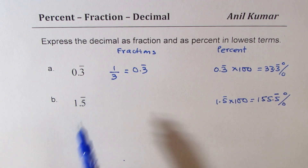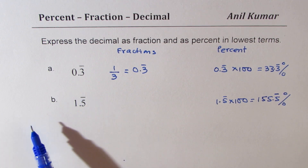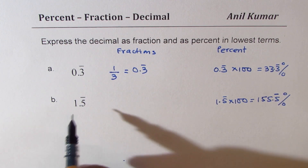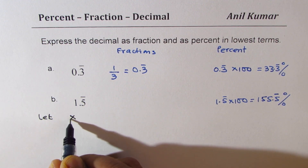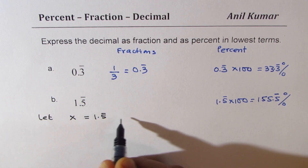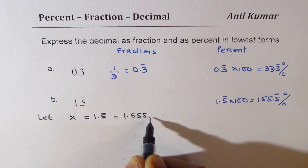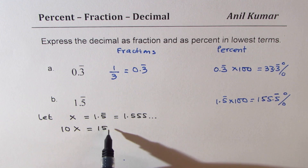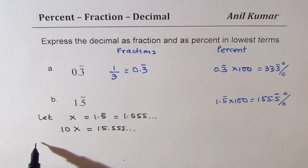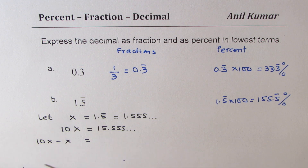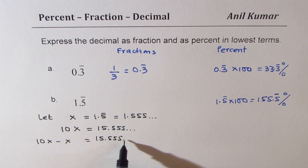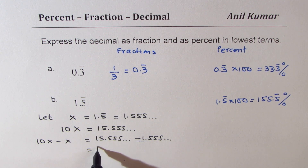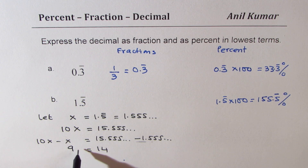Now let us see how to write them as fractions. The method is: let x equal 1.5 recurring, which really means 1.555... If I multiply this by 10, it becomes 10x equals 15.555... Now doing 10x minus x — that is 15.555... minus 1.555... — all the numbers after the decimal cancel off, so we just get 14 on one side and 10 minus 1 is 9. So we get 9x equals 14.